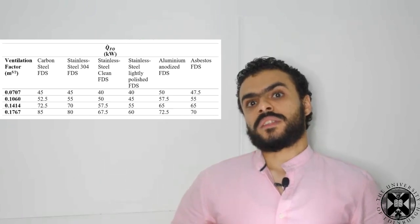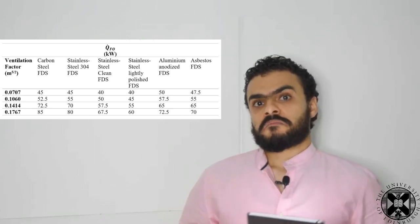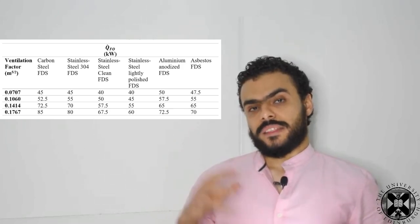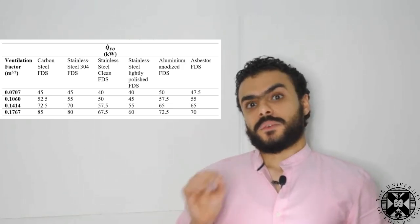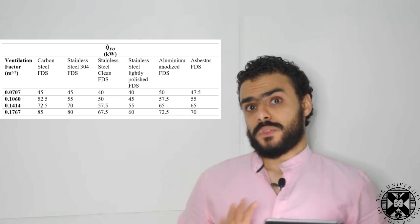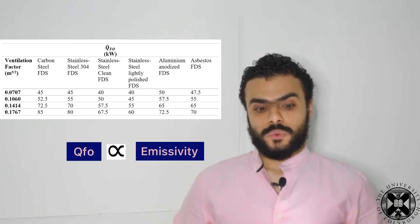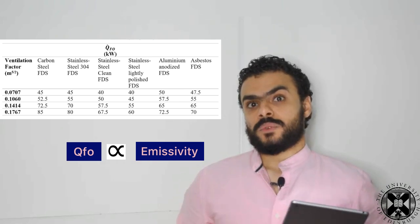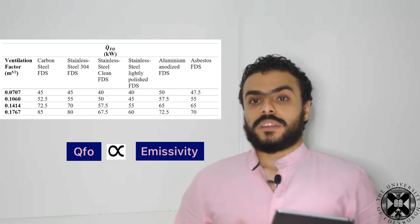This table is showing the final results. So clearly there was a relationship between the ventilation factor and the heat release rate needed for flashover, but there was also a relationship between the heat release rate needed for flashover and the emissivity of the walls, and that is a preliminary finding, so we need to prove it with a theoretical analysis.